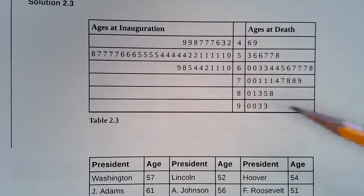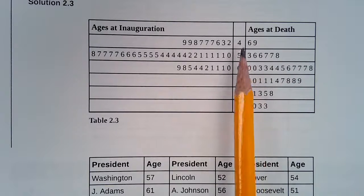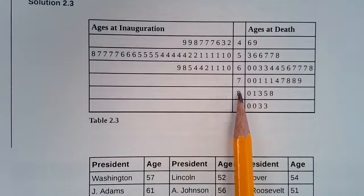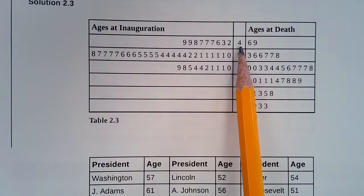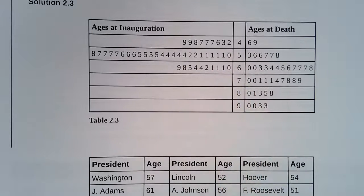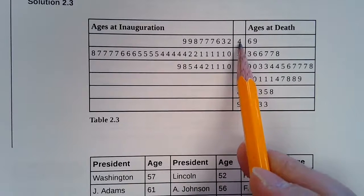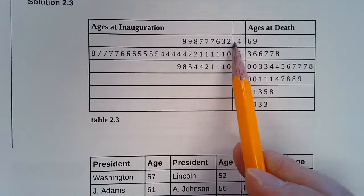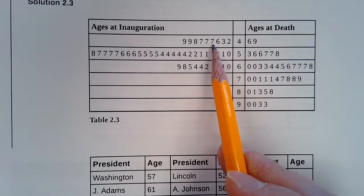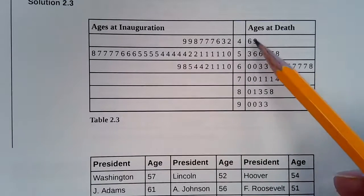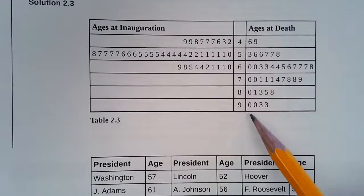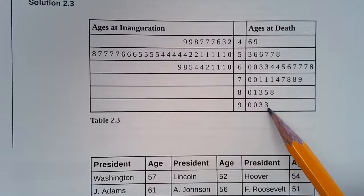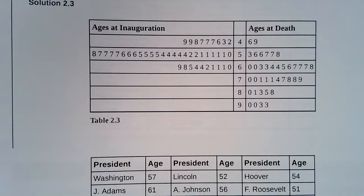Alright, so up here we have the side-by-side stem and leaf plot. So our stems are still 4, 5, 6, 7, 8, and 9. And this means that we had a president who was inaugurated at age 42 and then another president that was inaugurated at age 43, 46, 47, and so forth. And also it shows their death ages over here. So a president who died at age 46 and 49 all the way up to age 93. So this is a side-by-side comparison stem and leaf plot.